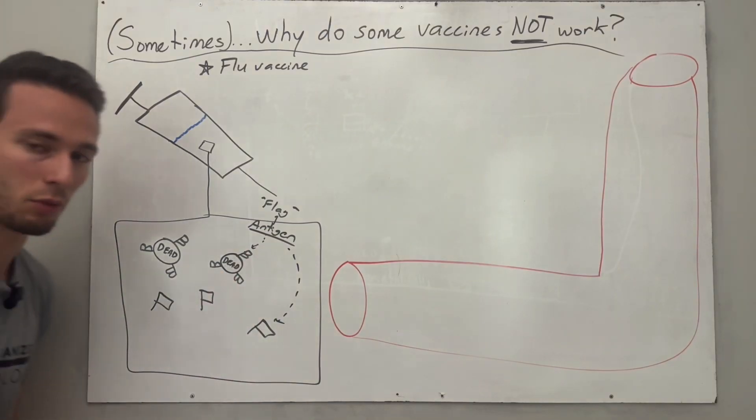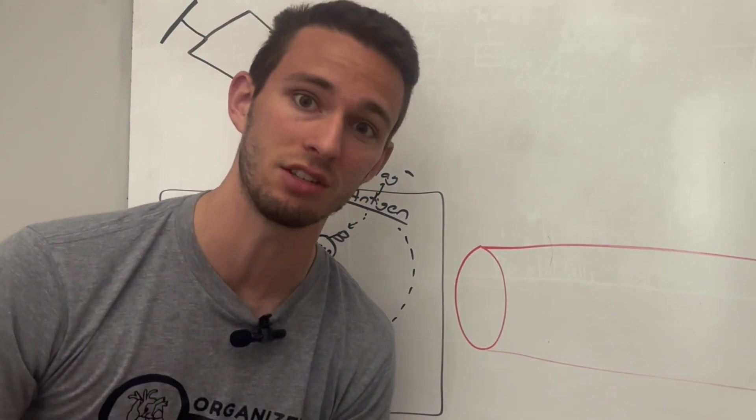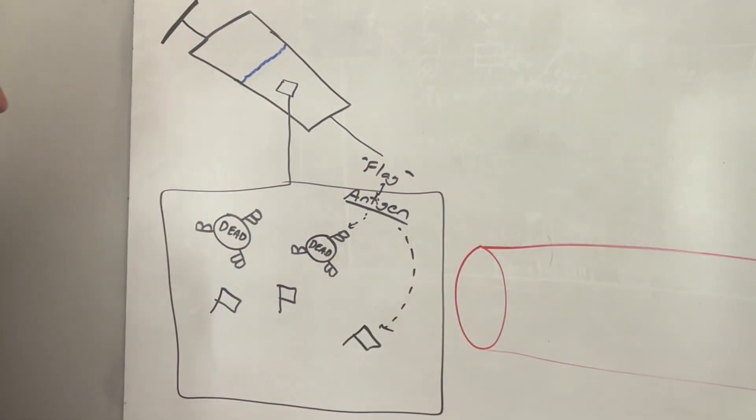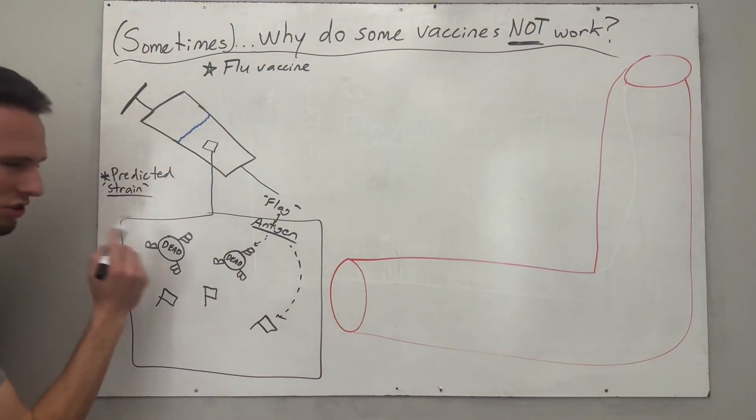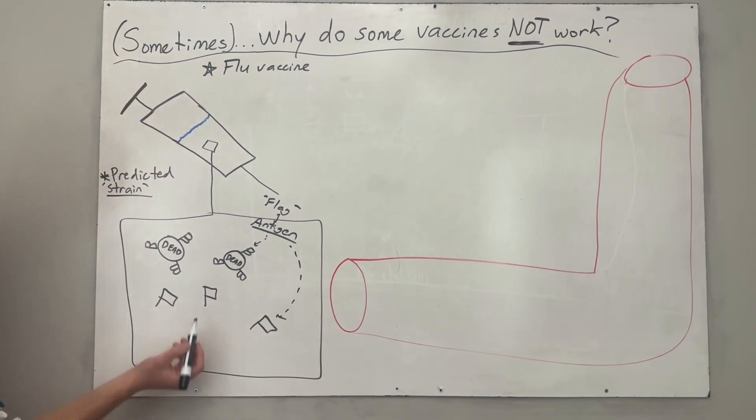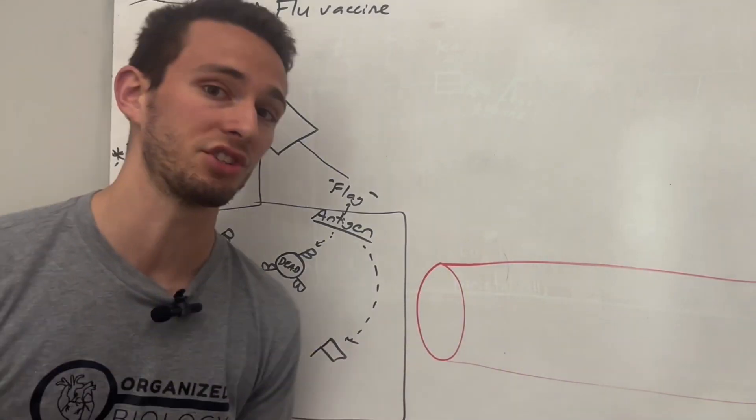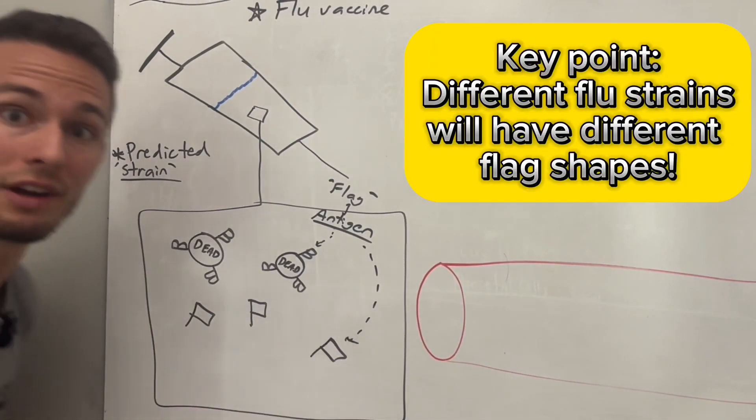Now what are these antigens specifically? Well, these are the predicted strains of the flu that we're expecting to see in the upcoming flu season. Now what is a strain? Well this is just specifically a different flag shape. So different viruses will have different strains or different flags.